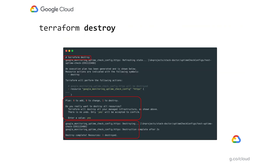If we want to clean up what we did, we can issue the Terraform destroy command. Similarly, if you apply, it will create and validate the plan of action. It will then ask us for confirmation before actually destroying the resource, and then let us know when it's done. And now we're back to a clean slate.